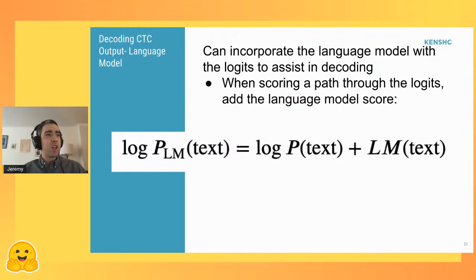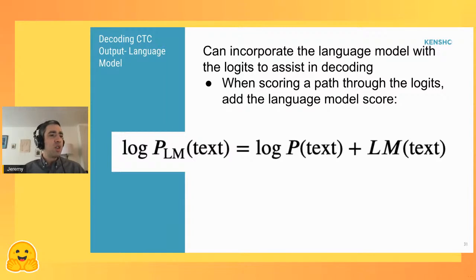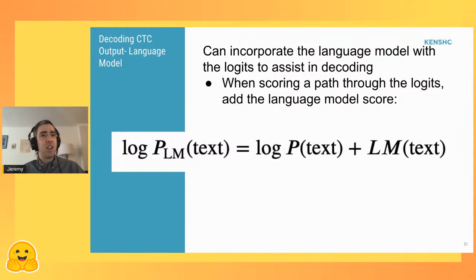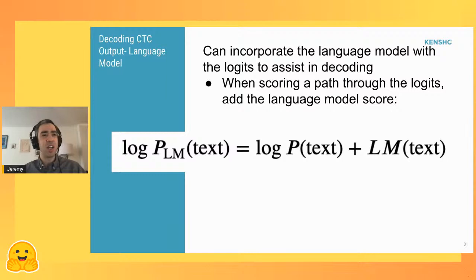We can try to incorporate this language model with our logits as we decode them. When scoring a path with logits, you assign a score to any given output text — you get the raw score of the output text given your output logits, and then add in some extra score given your language model. If you have a highly weighted piece of text, you'll have a small penalty; if the text looks very unnatural, it gets a larger penalty and is downweighted. This way you include language model information into your audio decoding.